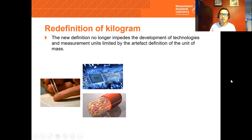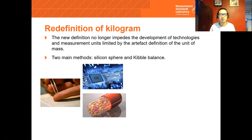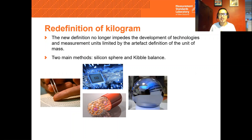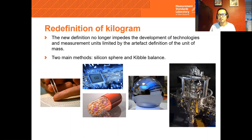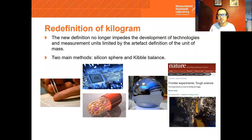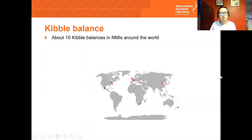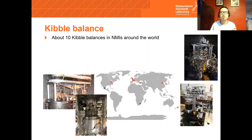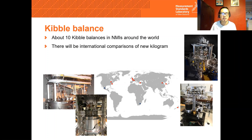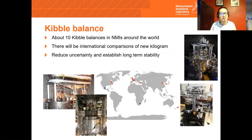There is currently international effort going into realizing the new definition at 1 kilogram to ensure a smooth transition between the old and new definitions. This is mainly done in two ways: one is by using the silicon sphere method, and the other is the Kibble Balance method. In fact, this was considered one of the toughest experiments by a Nature article back in 2012. There are currently about 10 Kibble Balances around the world. Following the redefinition of the kilogram, there will be a few international comparisons for realization of the new kilogram in the next decade or two, to compare performance and establish long-term stability of the Kibble Balance as a primary realization.